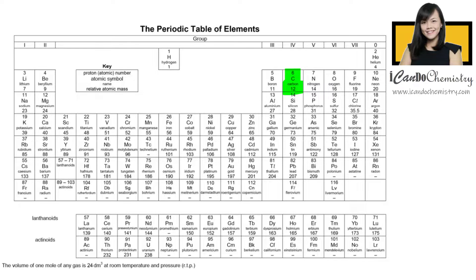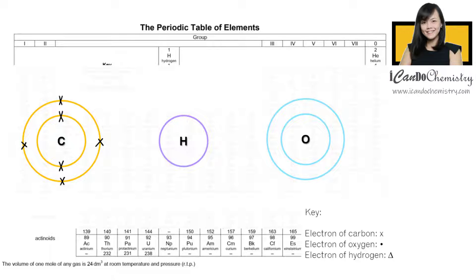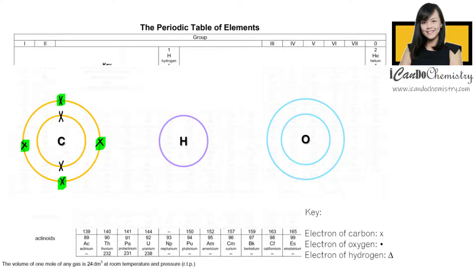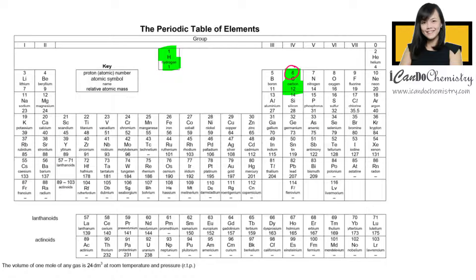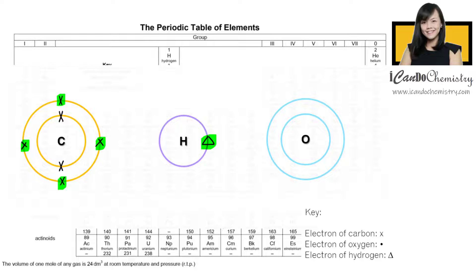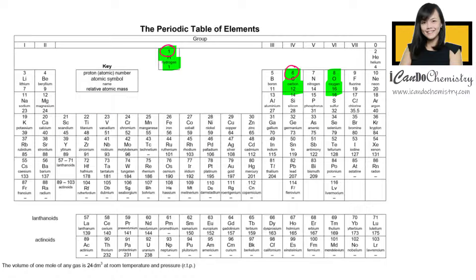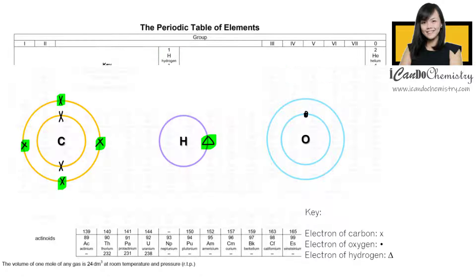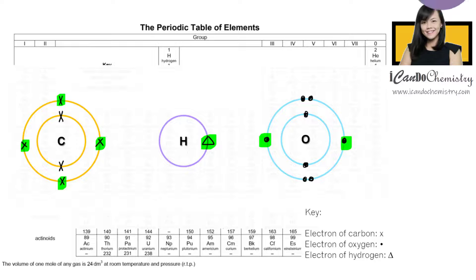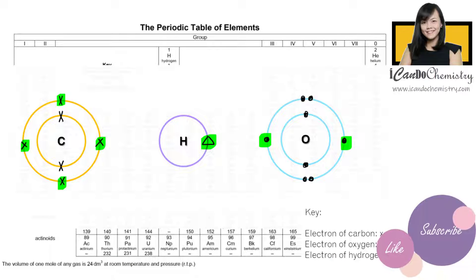This is carbon in the periodic table. It has six electrons, and it will use its four outermost electrons for bonding to achieve a stable noble gas octet electronic configuration. This is hydrogen in the periodic table — it has only one electron in its first shell, and it needs one more electron to achieve a stable noble gas duplet electronic configuration. This is oxygen in the periodic table. It has eight electrons, and it will share two of its outermost electrons with other non-metal atoms to achieve a stable noble gas octet electronic configuration.